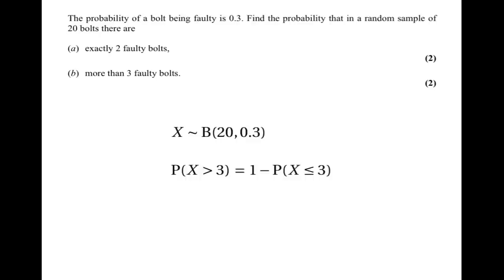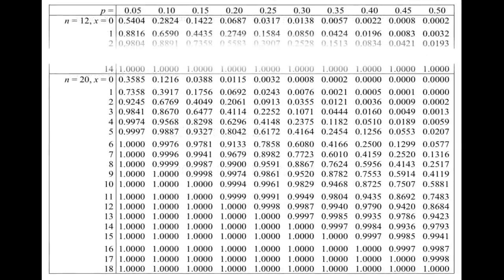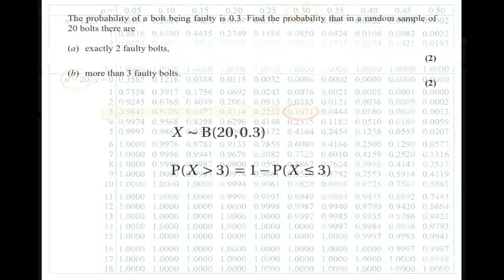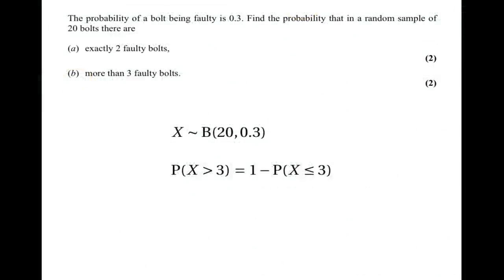We find P(X ≤ 3) by looking in the tables where n = 20, p = 0.3, and following the row from 3, which gives 0.1071. So the probability of having more than 3 faulty bolts is 1 minus 0.1071, which is 0.8929.